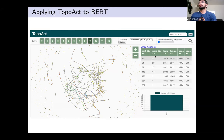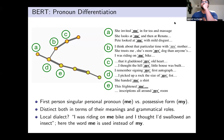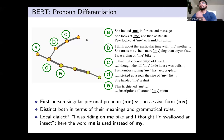One finding is that BERT performs pronoun differentiation. Looking at embeddings for the words 'me' and 'my', at node A there's a mixture of both pronouns, and then it branches into the singular personal pronoun 'me' in the upper branch and the possessive 'my' in the lower branch.